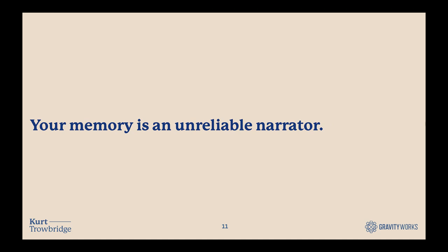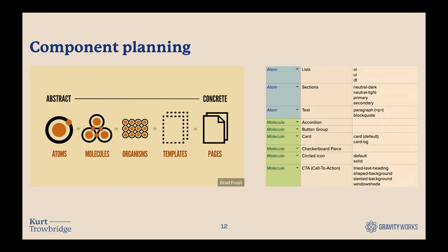These next few slides talk about considerations to document in the early stages of a project, starting with component planning. We build with component-based design in mind, and our developers and designers work together to break down components, name them, and build them out in a component library tool like Storybook. Atomic design breaks down a mock-up into smaller pieces — atoms, molecules, and organisms. We document our components using a template like a Google Sheet, listing atoms and molecules with their names and variants. Sometimes we use memorable names for components — things like a hero or a sidekick — to build a shared language among our teams.